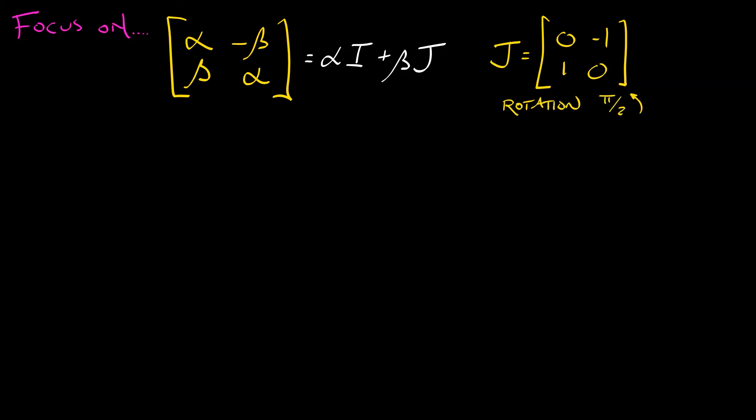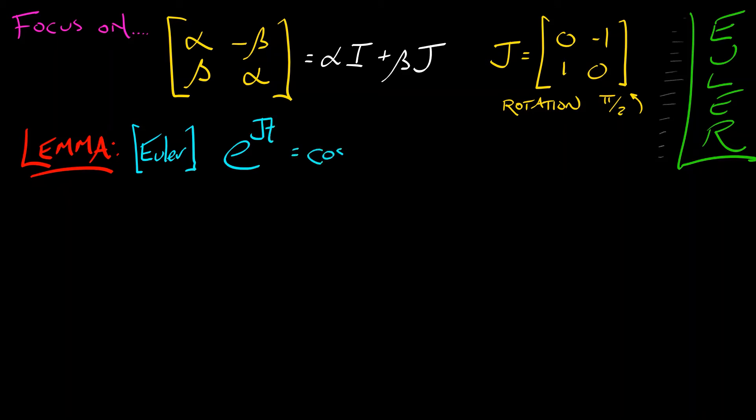Now, what we're going to do is whip out our Euler's formula and convert it into matrix form. Here's a lemma. E to the JT, where J is as above, is cosine of T times I plus sine of T times J. This is a matrix version of Euler's formula. What's the proof?